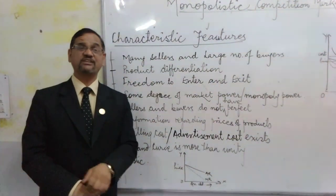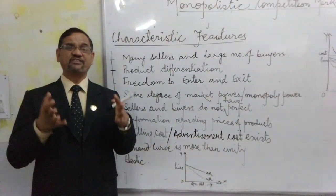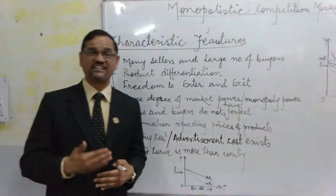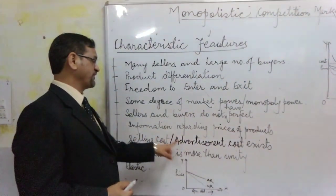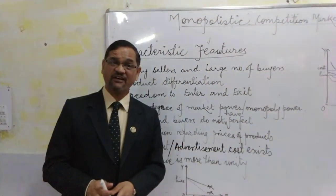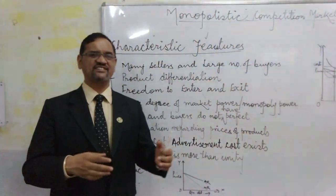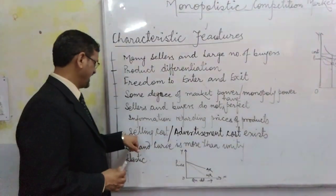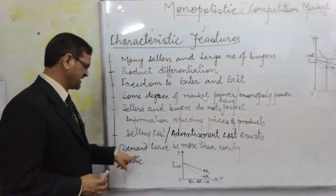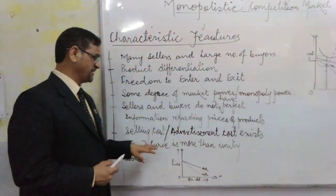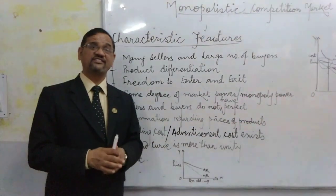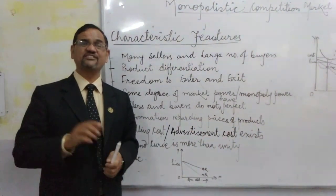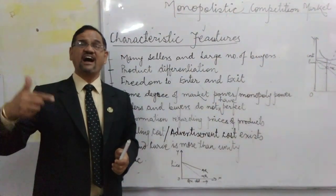Selling cost and advertisement cost is very important in this particular market because everybody is selling close substitutes. Everybody wants to face the competition. When there is competition, we have to advertise — we add on the selling cost. We get cine stars and celebrities to endorse our product, and the demand goes up. Advertisement cost is very, very important here. The demand curve in monopolistic competition is more than unity elastic — a decrease in price leads to a proportionately higher increase in demand.